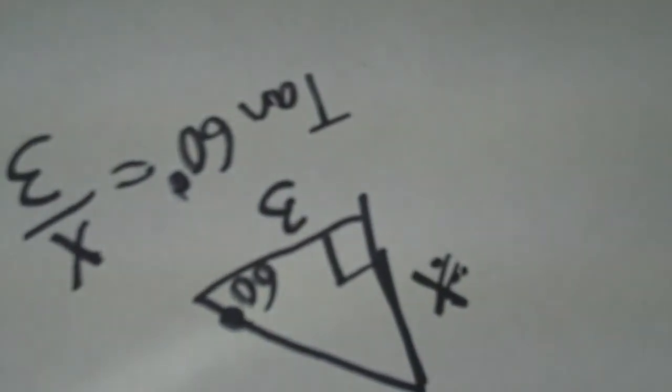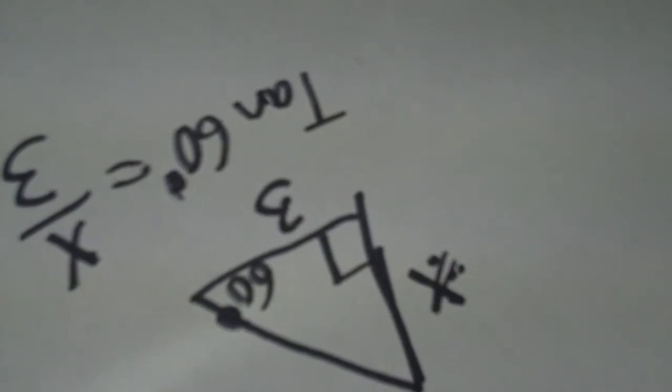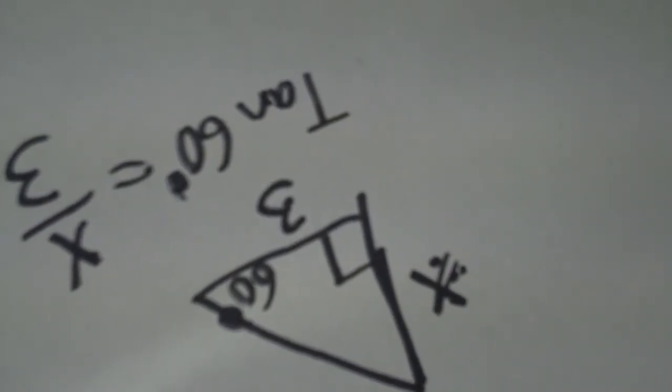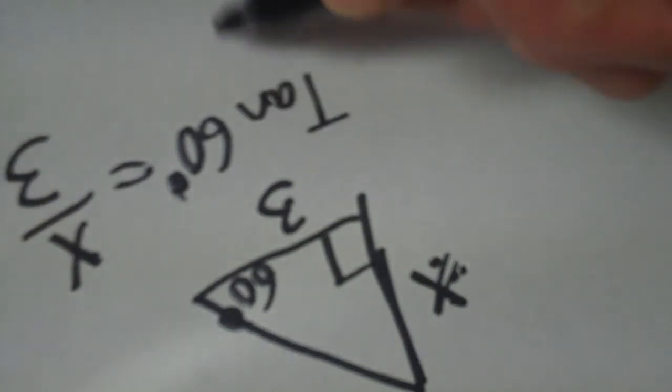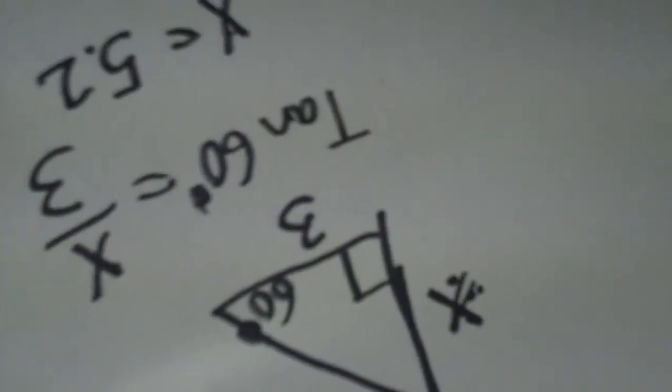Now I can do that little bit in my calculator, so I'll type in 60. I need to make sure that I am in degrees. Three's good. Tangent, 60 tangent, and then times three, and that gives me 5.19, so I'm going to say it's 5.2, being very lazy. So my X value is 5.2.